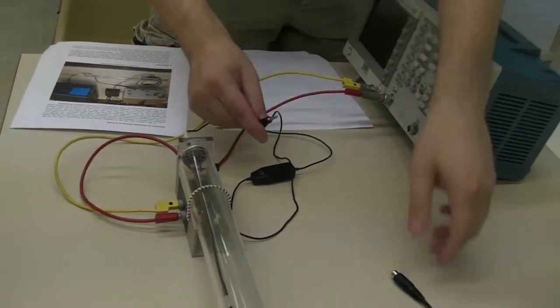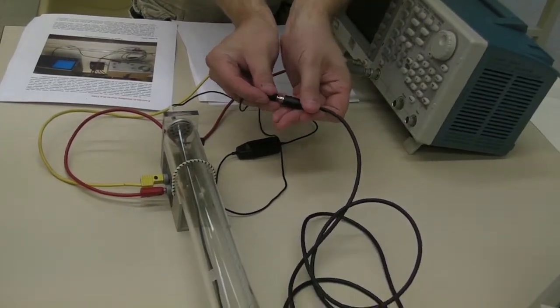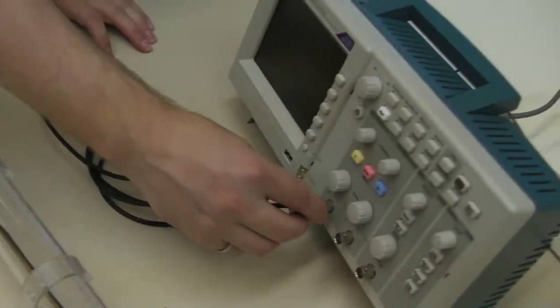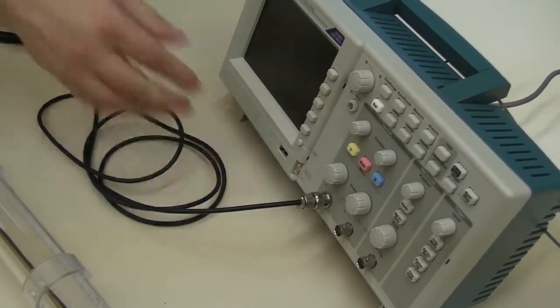Next, we'll need to connect the microphone through the supplied adapter cable into channel 1 of the oscilloscope. Make sure to turn on the microphone.